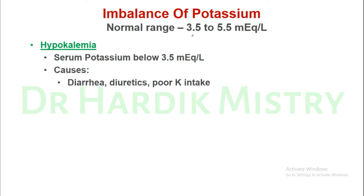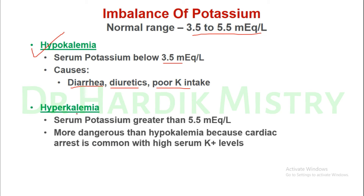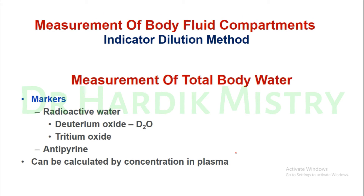Potassium imbalance: the normal range is 3.5–5.5 mEq/L. Hypokalemia occurs when serum potassium is below 3.5 mEq/L, caused by diarrhea, diuretics, and poor potassium intake. Hyperkalemia occurs when serum potassium exceeds 5.5 mEq/L and is more dangerous than hypokalemia because cardiac arrest is common with high serum potassium levels.